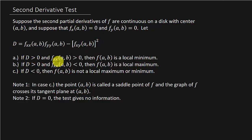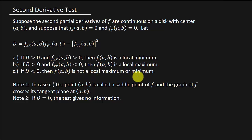So if D is positive and the second partial of F with respect to X is positive, then F of AB is a local minimum. If D is positive and the second partial of F with respect to X at AB is negative, then F of AB is a local maximum. And if D is less than zero, then F of AB is not a local maximum or minimum. When D is positive, you can have either a local max or a local min.